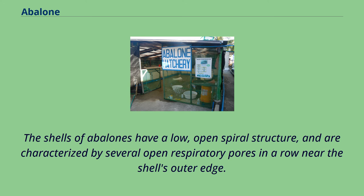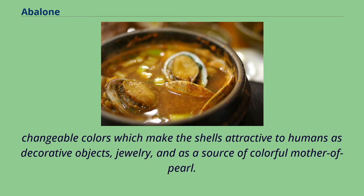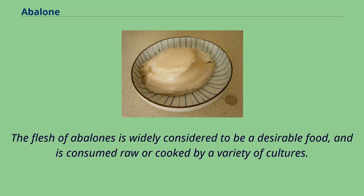The shells of abalones have a low, open spiral structure, and are characterized by several open respiratory pores in a row near the shell's outer edge. The thick inner layer of the shell is composed of nacre, which in many species is highly iridescent, giving rise to a range of strong, changeable colors, making the shells attractive to humans as decorative objects, jewelry, and as a source of colorful mother-of-pearl. The flesh of abalones is widely considered to be a desirable food, and is consumed raw or cooked by a variety of cultures.